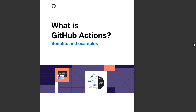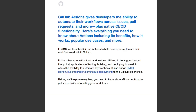I will tell you about GitHub Actions. In 2018, they launched GitHub Actions to help developers automate their workflows all within GitHub. In GitHub, we can test, build, and deploy applications, and there is flexibility to automate any webhook. It also brings CI/CD — continuous integration and continuous deployment — and using GitHub Actions we can automate our workflows.